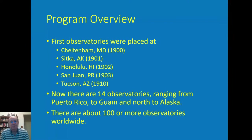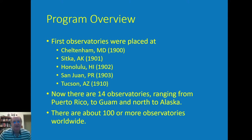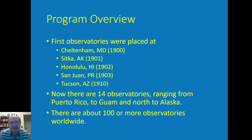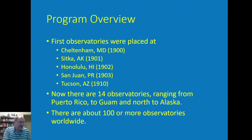The first observatories were mostly on or near the coast, with one exception — one was in Cheltenham, Maryland; Sitka, Alaska; Honolulu; Puerto Rico; and Tucson. Tucson is a little more interior. We now have 14 observatories, and there are — I put down 100 but I think there's closer to 120 or more observatories worldwide.